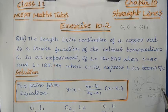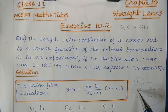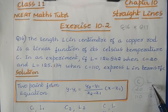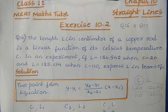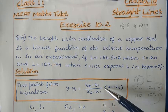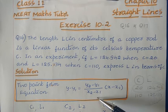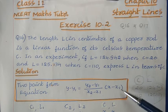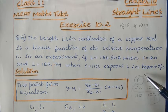Each value consists of two points — one is the Celsius temperature and the other is the length. This means we can apply the two-point formula: y minus y1 is equal to (y2 minus y1) divided by (x2 minus x1), into (x minus x1).